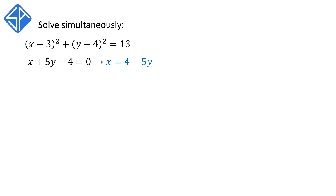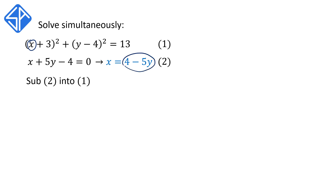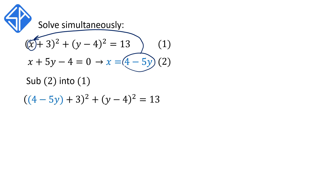We're going to call the equations equation 1 and equation 2, and we're going to substitute equation 2 into equation 1. This means that we want to replace the variable x from equation 1 with the expression 4 minus 5y from equation 2. This will give us 4 minus 5y plus 3, all squared, plus y minus 4 all squared, is equal to 13.